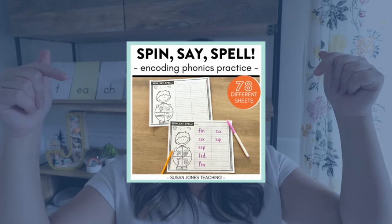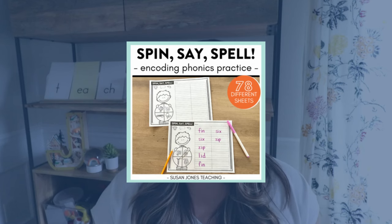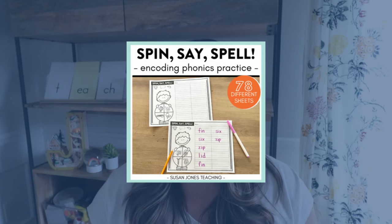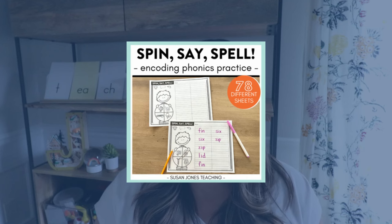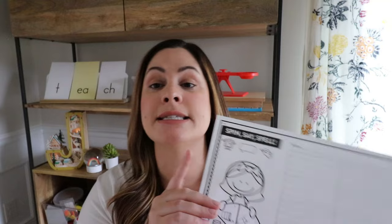Last but not least, there's a fun game called Spin, Say, and Spell that students can play independently or with a partner to review and practice this skill. I have an entire unit of these games for lots of phonics skills on TPT. It's divided into phonics skills so you pick what students are working on. In this video's freebie, I've included a version specifically for the floss rule.